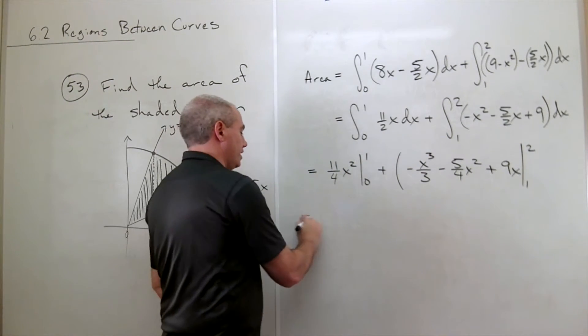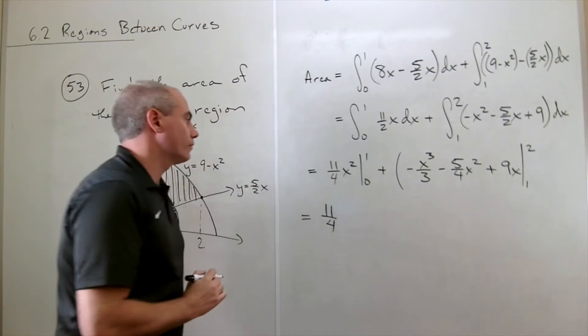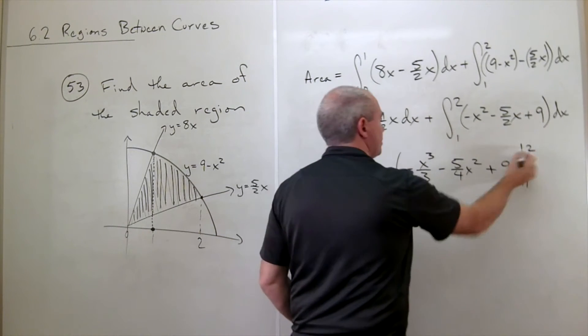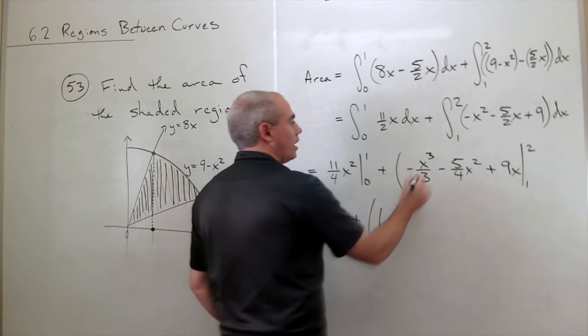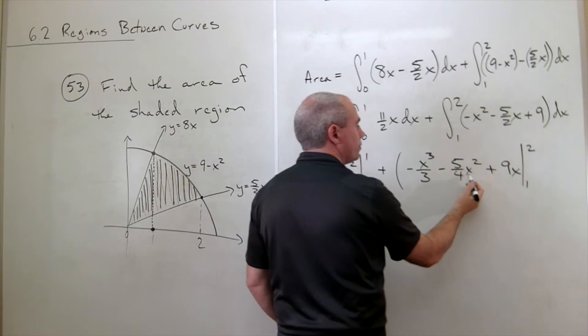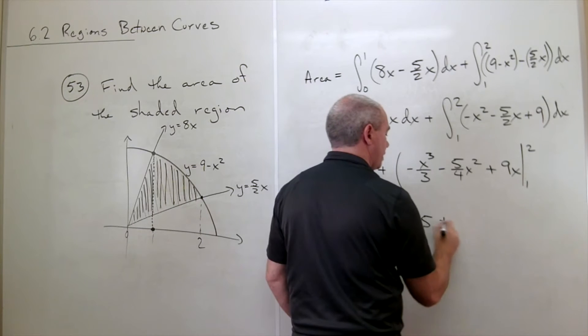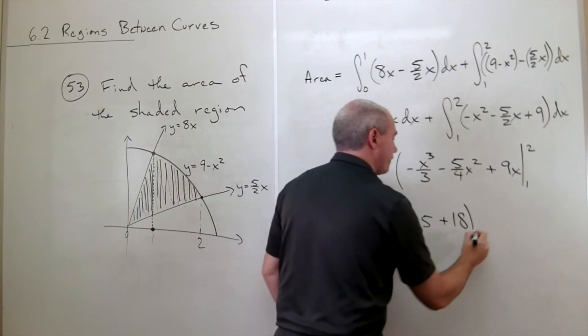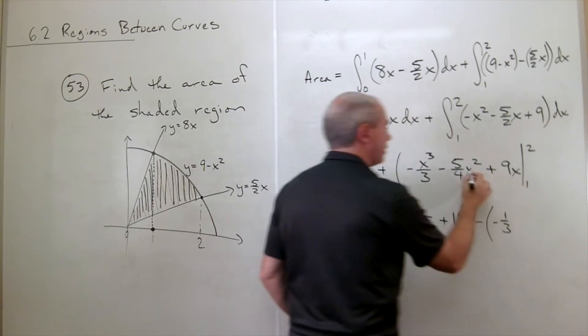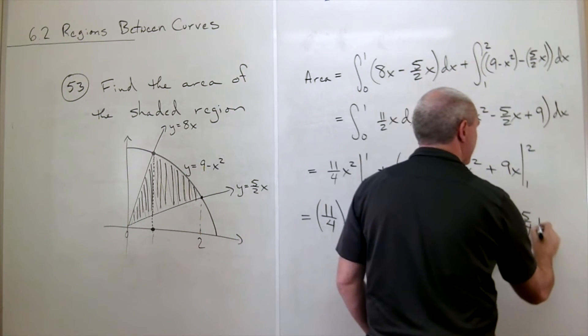Alright, let's plug things in. We plug in the 1 and we get 11 over 4. We plug in the 0 and we get 0, so we just get 11 over 4. Now let's plug in the 2 and we get negative 8 thirds. We plug in the 2 and we get a 4 here, so I get minus 5. We plug in the 2 and I get plus 18. That's the first piece. Now I need to plug in the 1 and I get minus 1 third, minus 5 fourths, and plus 9.